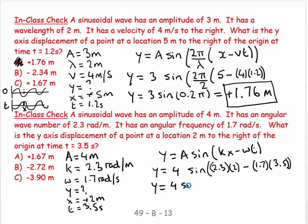So y equals 4 sine. It's going to be 4.6 minus, oh I need to calculate that bit. 1.7 times 3.5, so that's going to be 5.95. So y is going to equal 4 sine, 4.6 minus 5.95 equals minus 1.35.